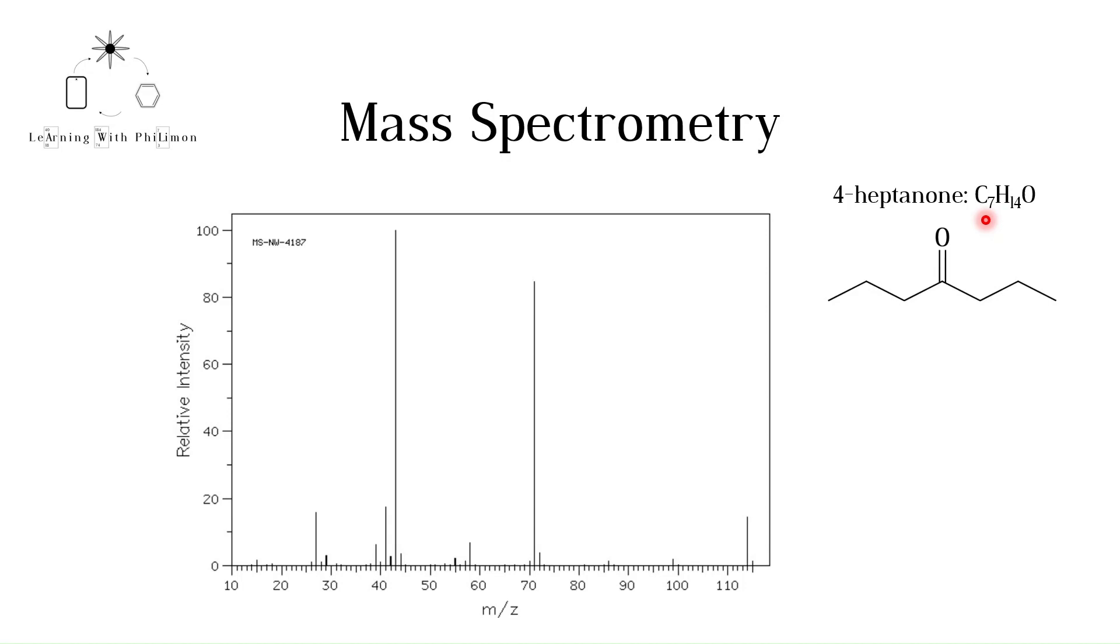When 4-heptanone is ionized, we form this ion. Note that as an electron is lost, the mass is not significantly altered. The ion goes through the mass spectrometer and is detected. To calculate the relative molecular mass, we should add all the relative atomic masses of the elements in the molecular formula as we find them in the periodic table.